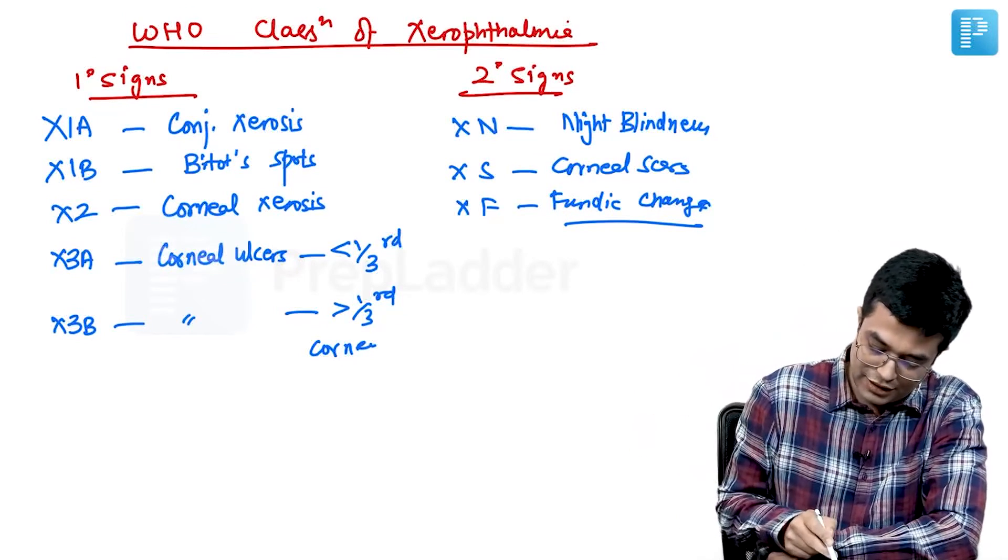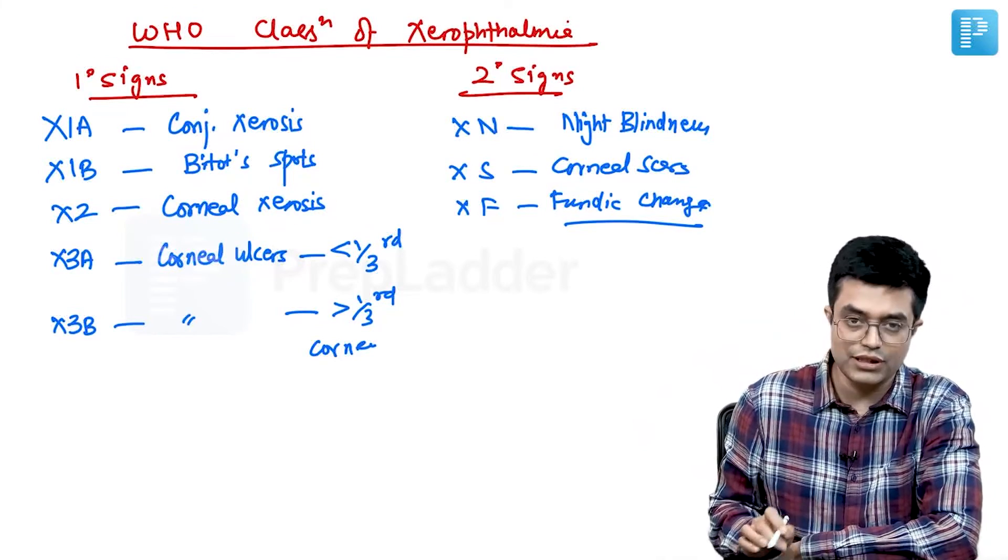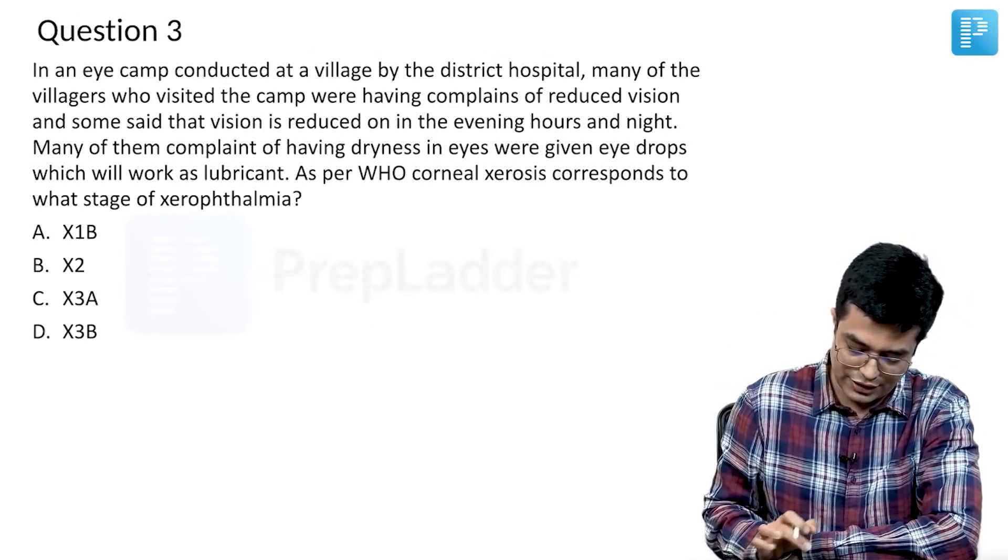the answer will be conjunctival xerosis, right? X2, in this question, corneal xerosis is there. So, obviously, the answer to this question is X2.